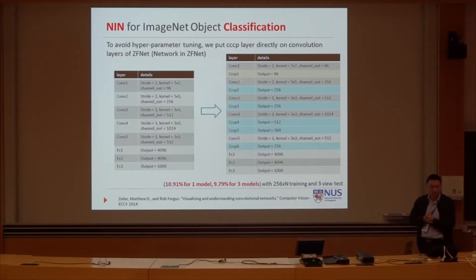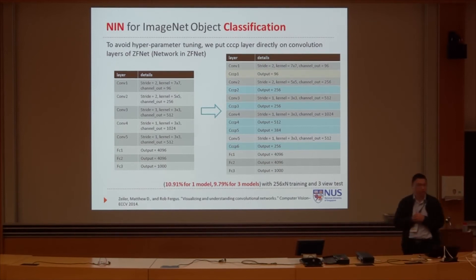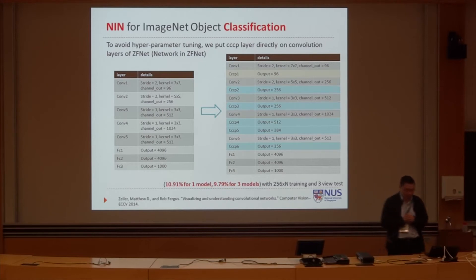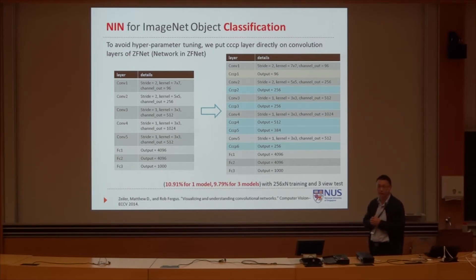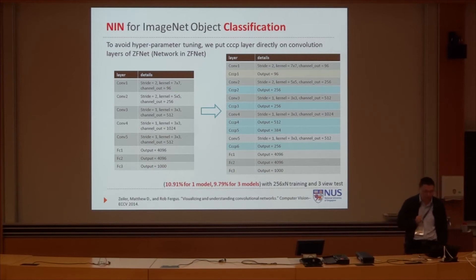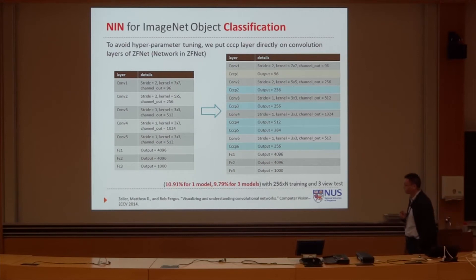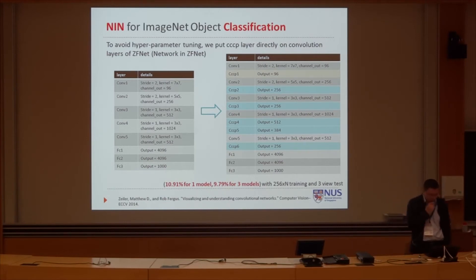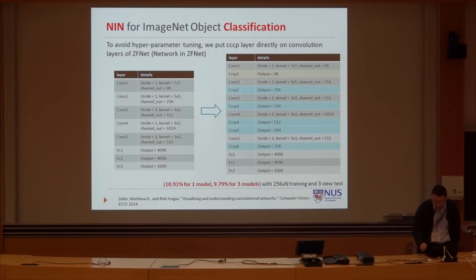This year, we also explored the Network in Network for the classification task and tried different solutions, but we forgot a very important one — the deeper Network in Network. We noticed that a simple strategy can get not-so-bad performance. Based on Zeiler's algorithm, we insert CCCP layers — small network layers — into different convolution layers. In total, we insert six CCCP layers. Based on one single model, we can achieve about 10.91. If we use three models, we can achieve 9.79. We predict that with 10 models, the performance should be between 8 to 9, but for a university the computation resources are quite limited, so we only use three models.